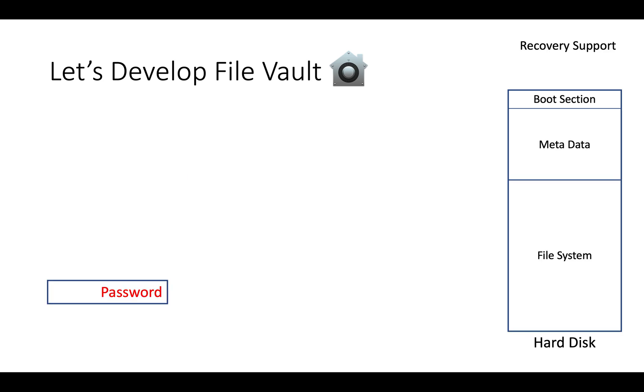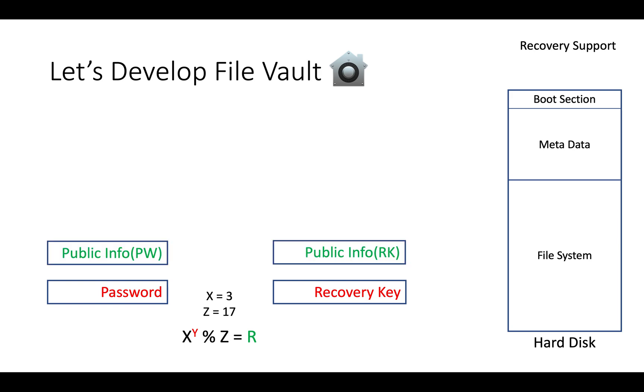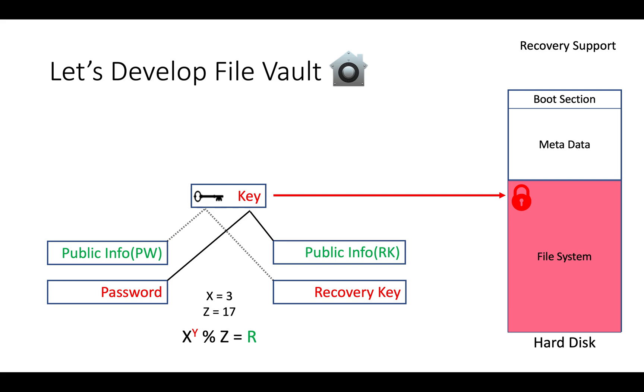Let's take password from user. Generate recovery key or random number. Bring Diffie-Hellman formula. Define constant values. Using this formula, generate public info. Using cross-combination means password and public info of recovery key, or recovery key and public info of password, generate a common key. Use the key to encrypt hard disk. Store public information and constant into metadata section.